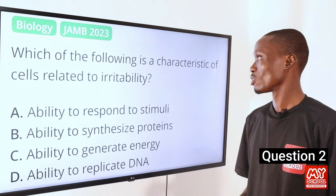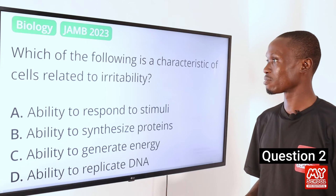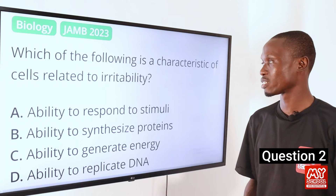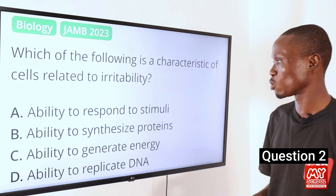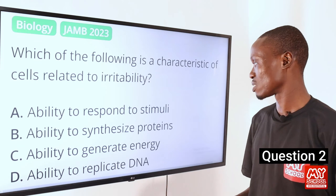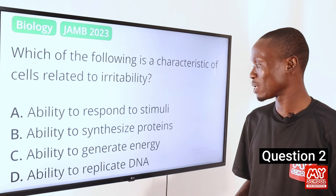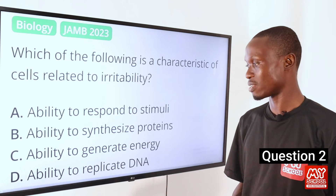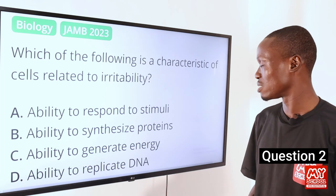Question 2. Which of the following is a characteristic of cells related to irritability? A, ability to respond to stimulus. B, ability to synthesize proteins. C, ability to generate energy. And D, ability to replicate DNA.